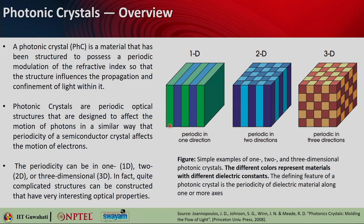Here you can see different colors representing different materials. You have material 1 and material 2 — you can take slabs and repeat them, so the periodicity is in one dimension. We call this a 1D photonic crystal. Two materials are involved: N1, N2, N1, N2, N1, N2 and so on. It is a periodic structure, and we are just showing a small portion of it.